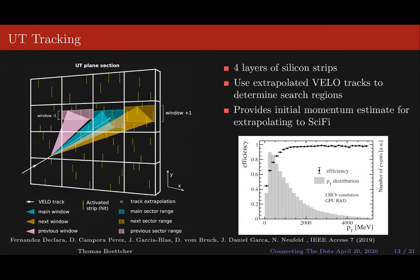Once we have VELO tracks, we forward these to the UT — a four-layer silicon strip detector. We use the extrapolated VELO tracks to open search regions on the first layer of the UT, then create three or four hit UT track candidates. The UT has a small magnetic field in this region, giving us our first momentum estimate of the tracks and allowing us to know roughly where to extrapolate on the SciFi.